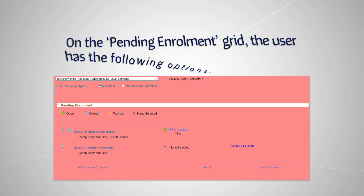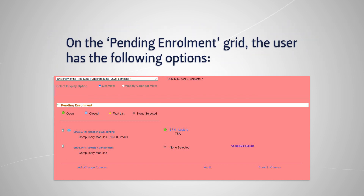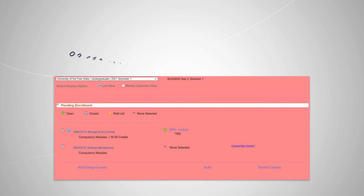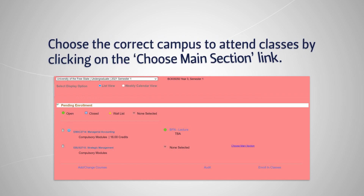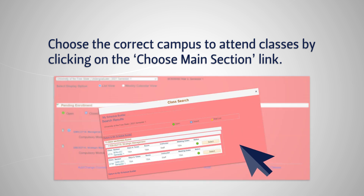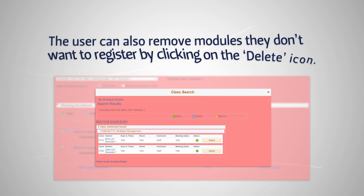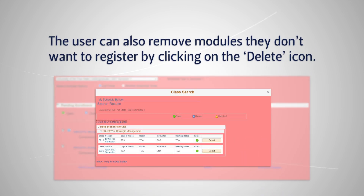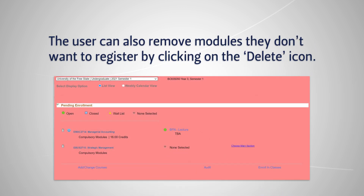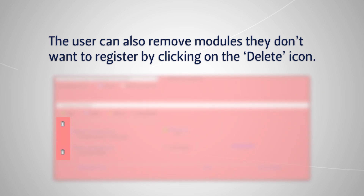On the Pending Enrollment grid, the user has the following options: choose the correct campus to attend classes by clicking on the Choose Main Section link. The user can also remove modules they don't want to register by clicking on the Delete icon.